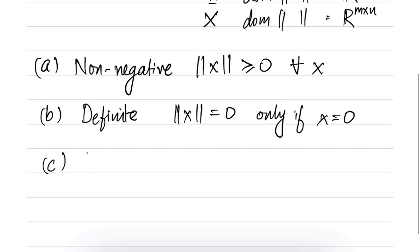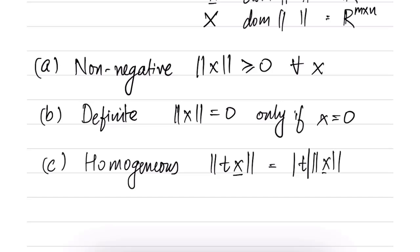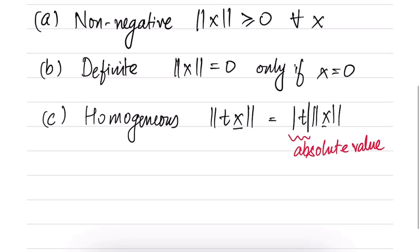The third property is the homogeneity property which is saying that the norm of tx, where t is a scalar and x could be a vector or matrix, is of the form |t| times ||x||. So t can be an arbitrary scalar. If t is negative you have to take the absolute value. So this is the homogeneity property which is saying that the scalar comes out and we take its absolute value.